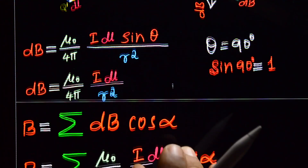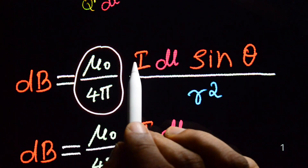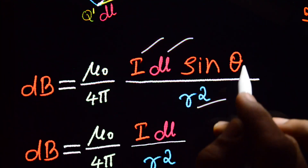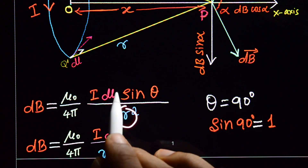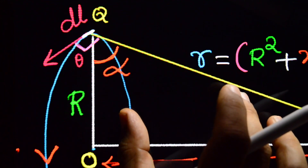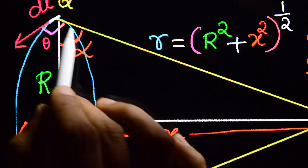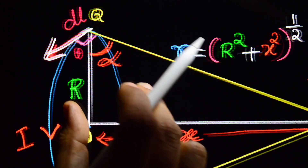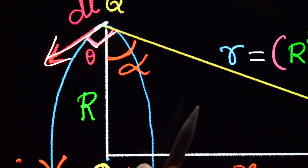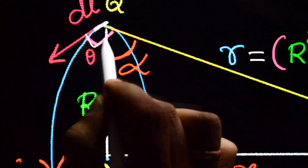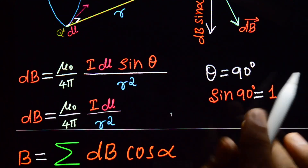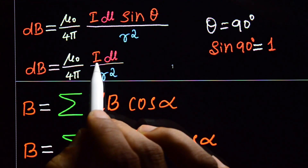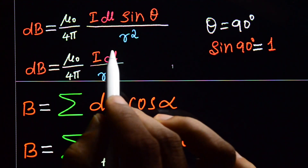According to Biot-Savart's Law, DB = (μ₀/4π) × (I DL sinθ / r²), where θ is the angle between the direction of DL and r. Observing the geometry, the direction of the current element DL is perpendicular to r, so θ = 90°. Since sin(90°) = 1, the equation simplifies to DB = (μ₀/4π) × (I DL / r²).